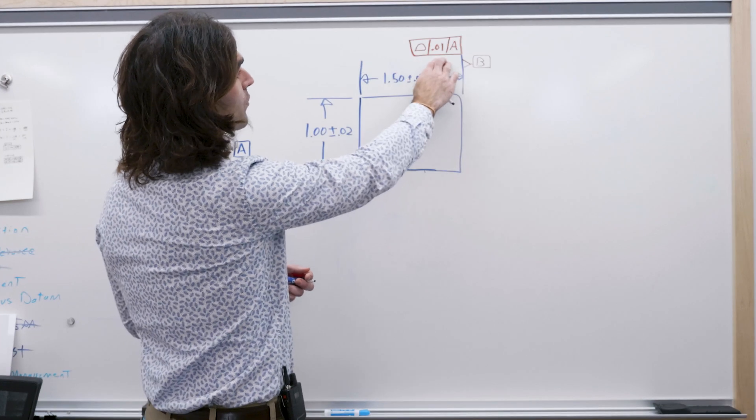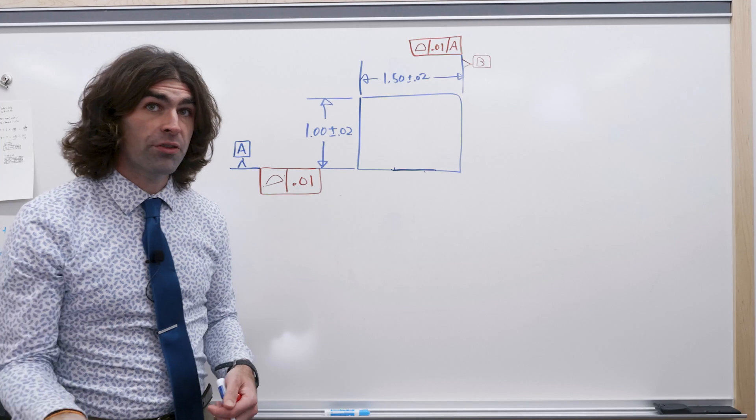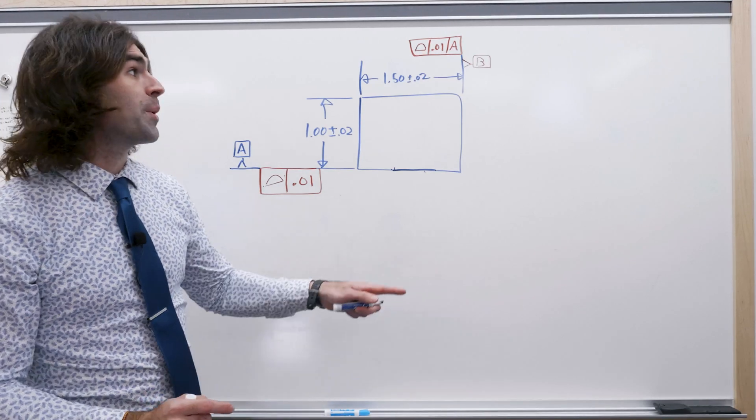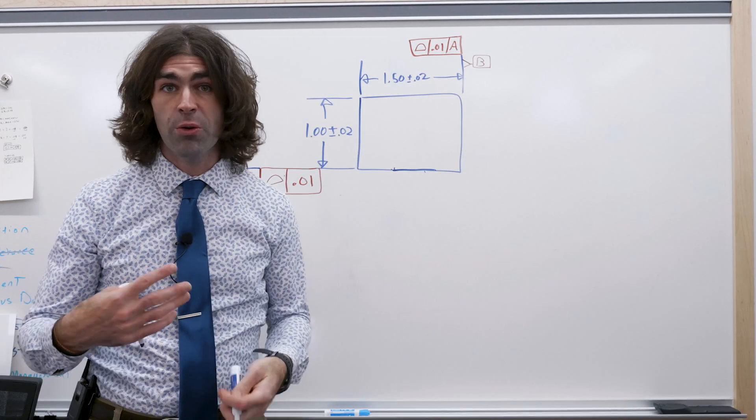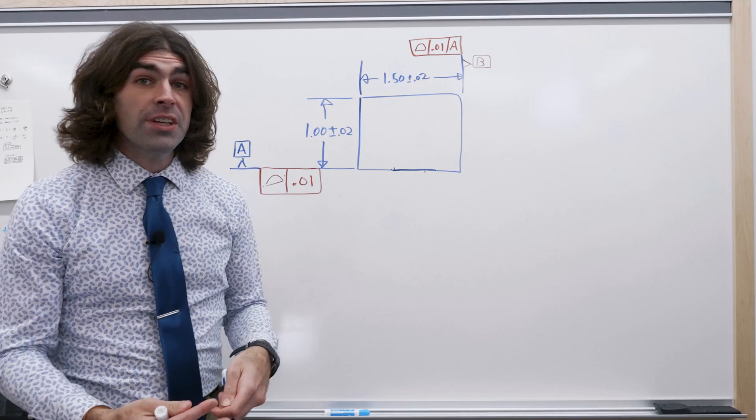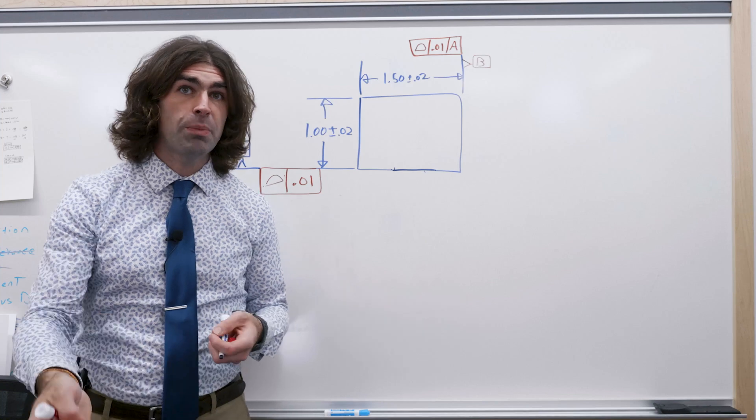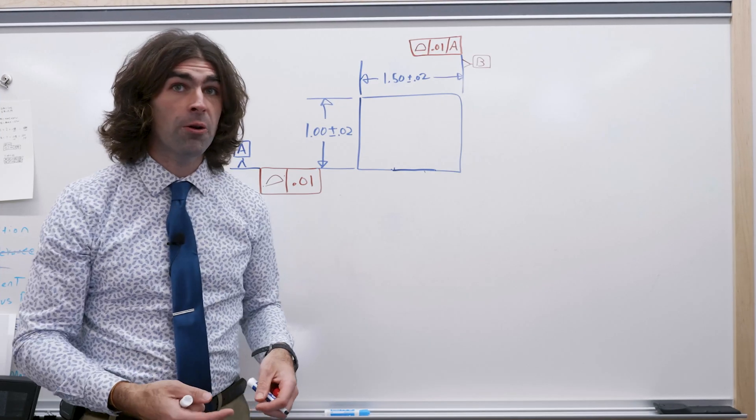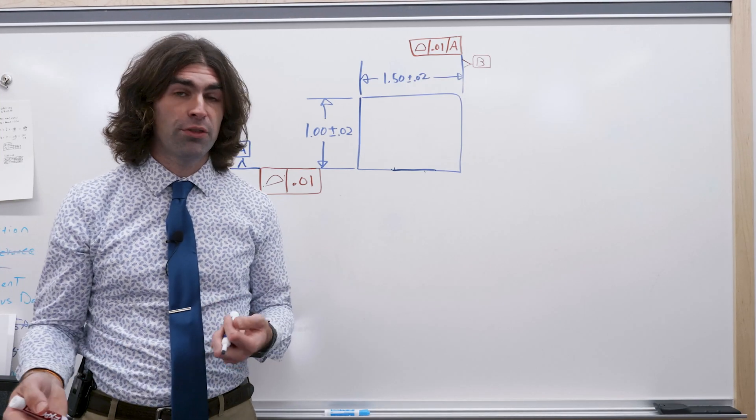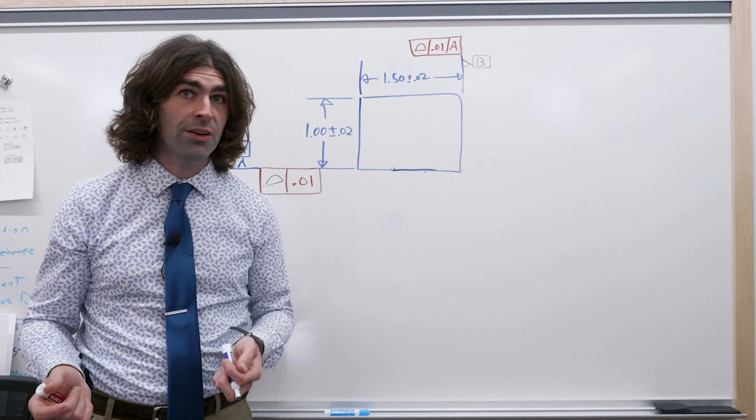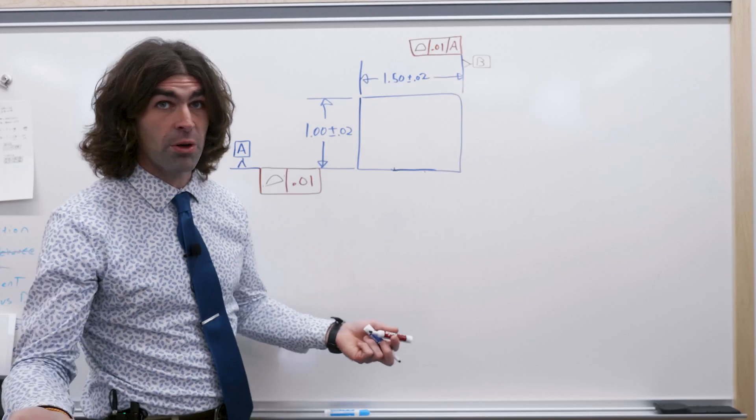So profile of a surface effectively does what perpendicularity does. Now if you're making drawings you can run into hot water here because people are not used to seeing this used like this, even though it's totally fine according to the standard. People see profile and they assume it's for a complex feature or a special inspection, but because you watch this video you know that it's not. Profile by itself doesn't indicate that it's a special inspection or any kind of procedures. You just got to pay attention to these datum references to see what's going on.